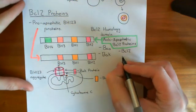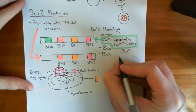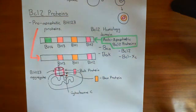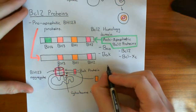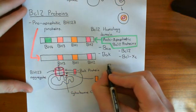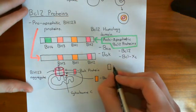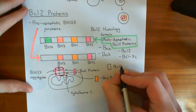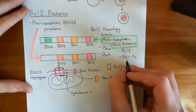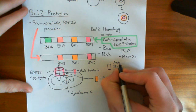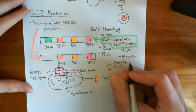BCL2 is an example of an anti-apoptotic BCL2 protein, and there's also BCLXL. These two are very important examples of anti-apoptotic BCL2 proteins, though there are more. For the basis of this discussion, I won't distinguish between the function of BCL2 and BCLXL, so I'll call this just an anti-apoptotic BCL2 protein — but it could be BCL2, BCLXL, or any of the others as well.